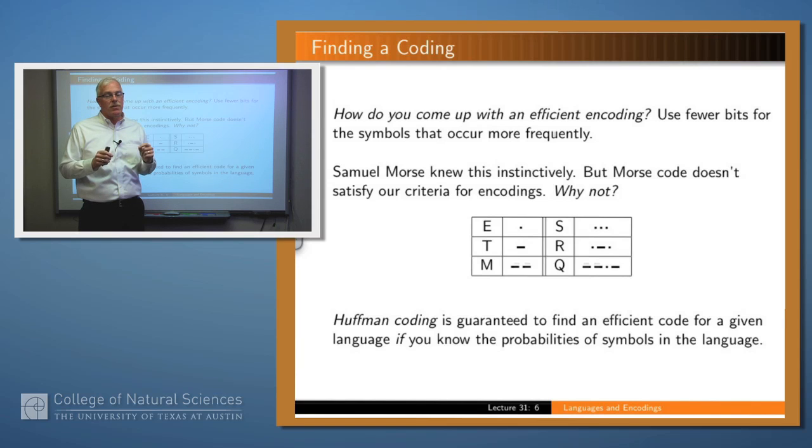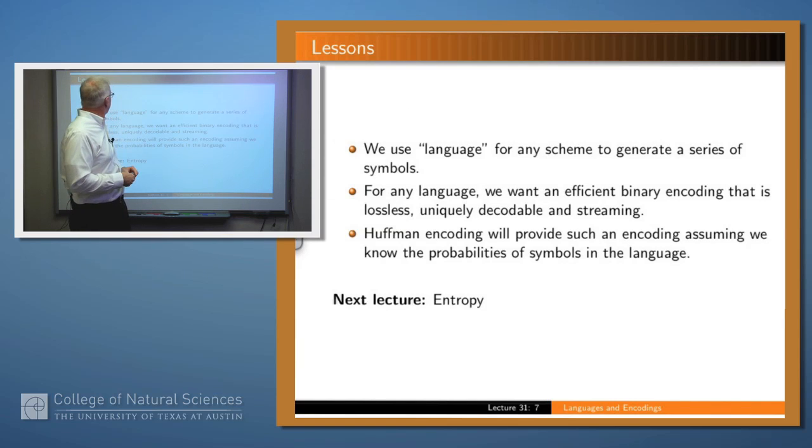And that's what we want to avoid. So Morse code isn't a good encoding from our perspective, though it works fine for telegraphs, right? There are some algorithms that allow you to find an efficient encoding. In fact, Huffman coding is one such algorithm. And Huffman coding is guaranteed to find an efficient code if you know the probabilities of symbols in the language.